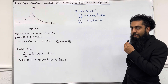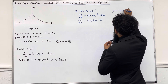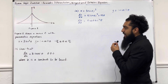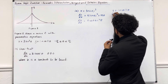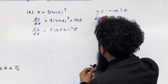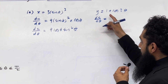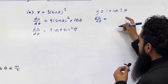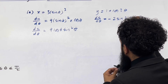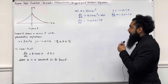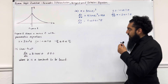The y parametric is y equal 1 plus cos 2 theta. I need to work out dy over d theta, differentiating y with respect to theta. The first term differentiates to 0, and cos 2 theta differentiates to minus 2 sine 2 theta. Now I'm going to apply parametric differentiation.